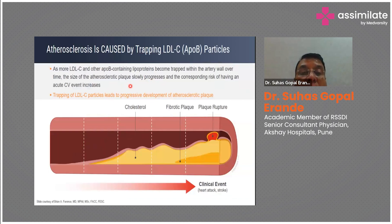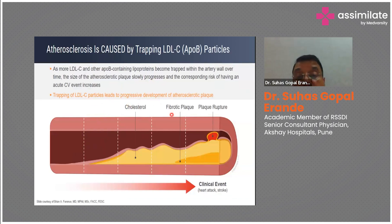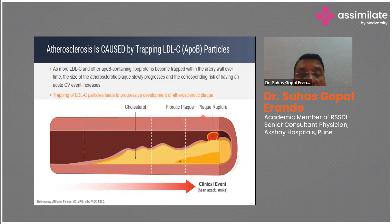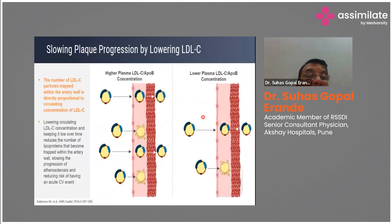As more LDL and other ApoB lipoproteins become trapped, the atherosclerotic plaque enlarges. If the plaque grows rapidly, the fibrotic cap becomes poor and lipid content is higher, making it an unstable plaque. This can rupture, resulting in a heart attack, stroke, or other clinical event. The number of LDL particles trapped within the arterial wall is directly proportional to the circulating concentration of LDL.